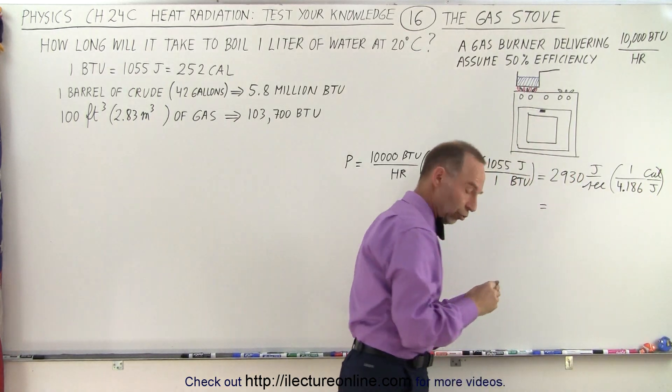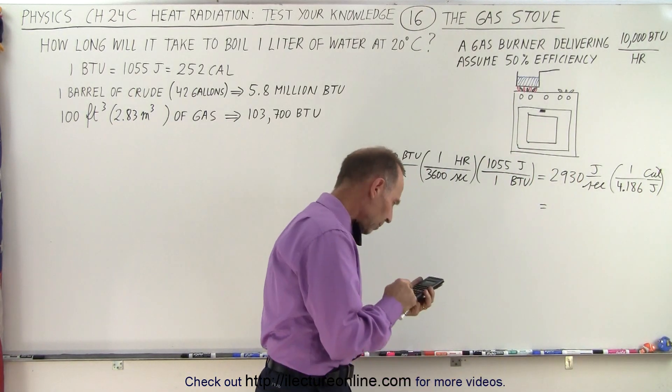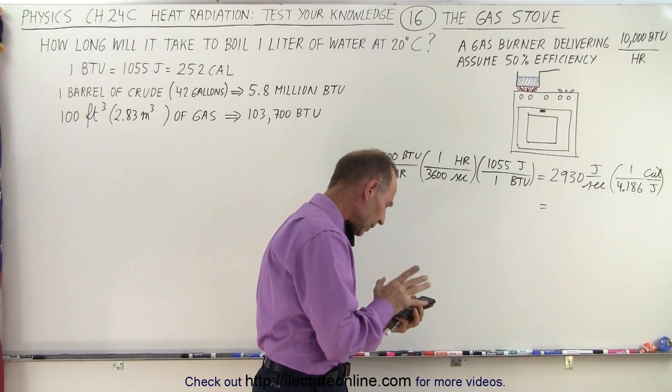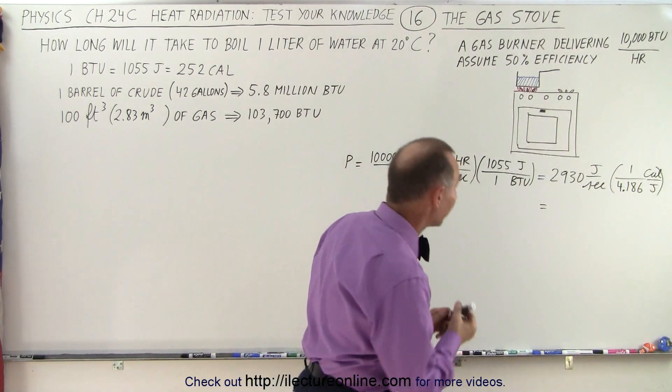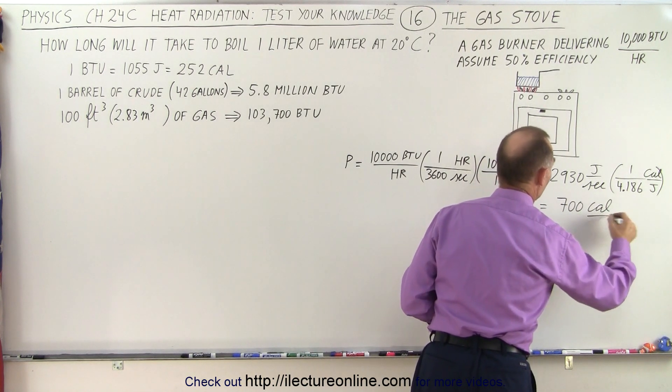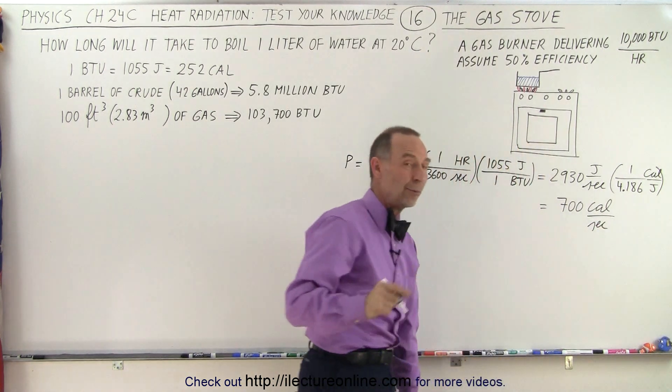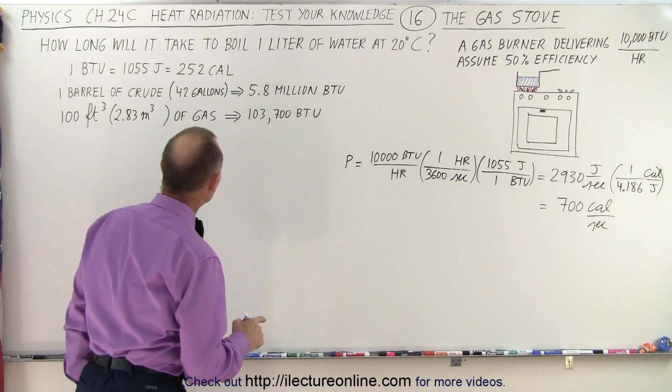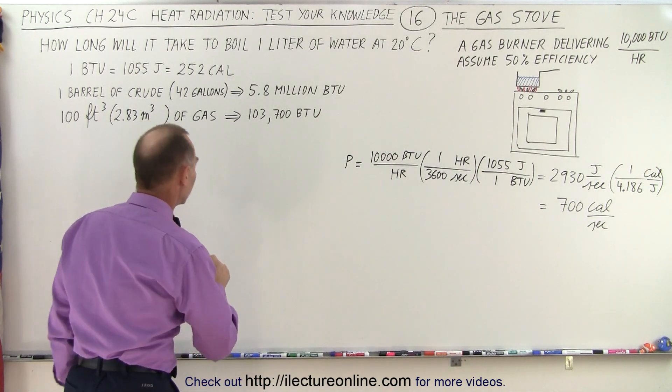So, this then converts to, if you divide this by 4.186, we get almost exactly 700 calories per second. So, now we're ready to calculate how long it's going to take to boil that water.